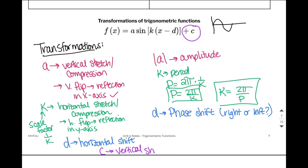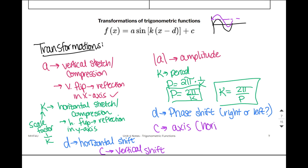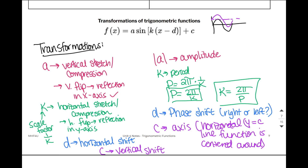The c value always tells us a vertical shift — are we going up or going down? In a trig function, we need to have a line that the graph is centered around, called the axis. The c value always tells us the axis: y = c. So it is still a vertical shift — you're moving it up or down — it just happens to be a horizontal line that it is centered around.